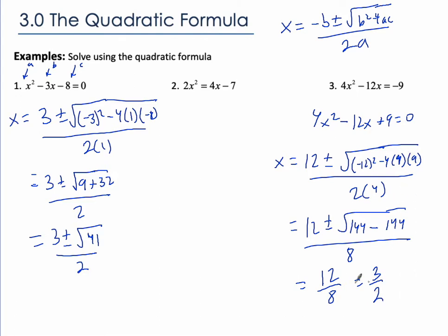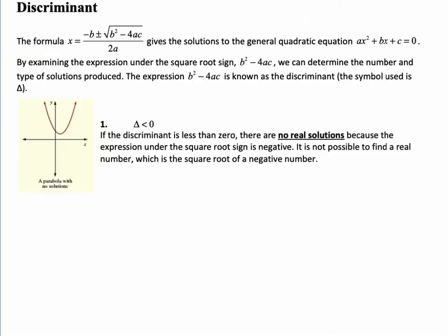So you see, here we have two answers, and here we have one answer. Sometimes we get no answers. If the square root is a negative number, we get no answers because you can't square root a negative.